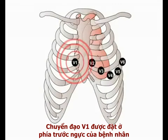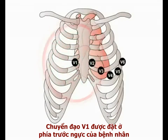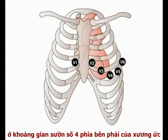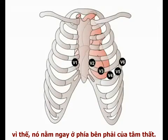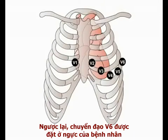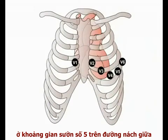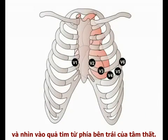Lead V1 is placed on the anterior surface of the patient's chest in the fourth right intercostal space to the right of the sternum, and therefore to the right of the bulk of the ventricles. In contrast, lead V6 is placed on the patient's chest in the fifth intercostal space mid-axillary line and looks at the heart from the left of the ventricles.